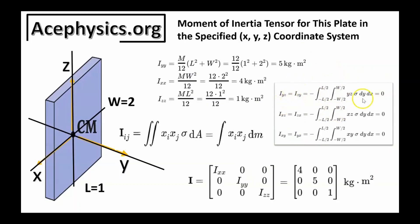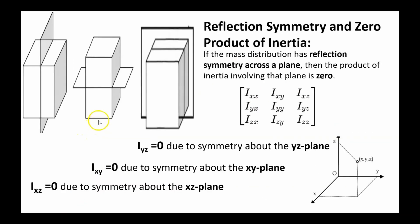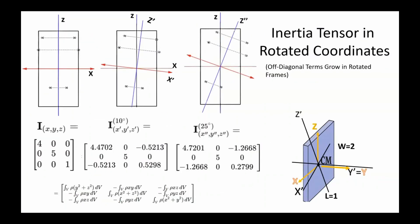This slide covers reflection symmetry and zero products of inertia. If the mass distribution has reflection symmetry across a plane, then the product of inertia involving that plane is zero. If Iyz = 0, there is symmetry about the yz-plane. If Ixy = 0, there is symmetry about the xy-plane. If Izx = 0, there is symmetry about the xz-plane. The z-axis divides the plate symmetrically — any mass on one side has a symmetrically reflected mass on the exact opposite side.